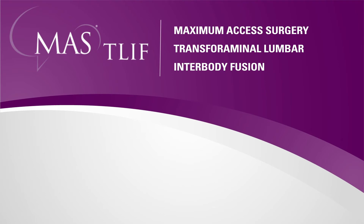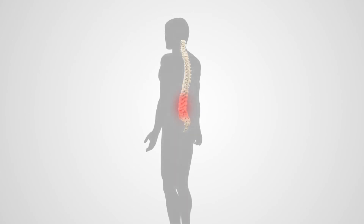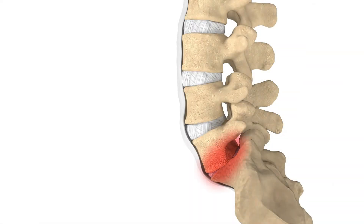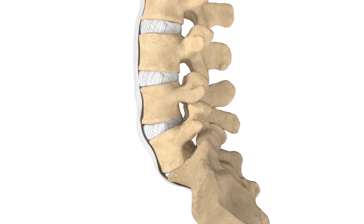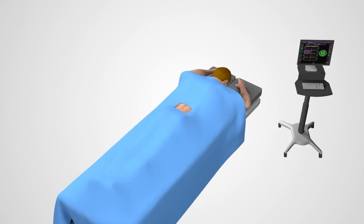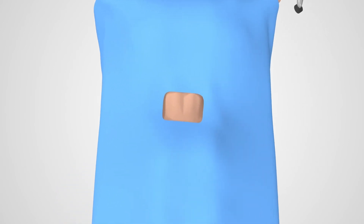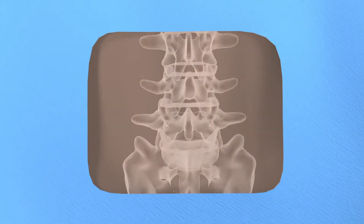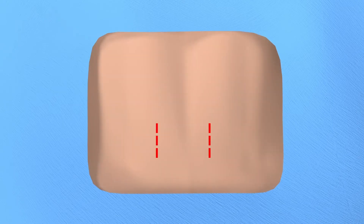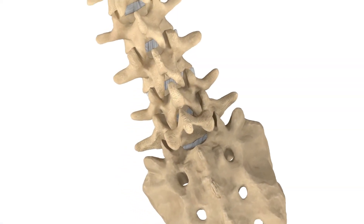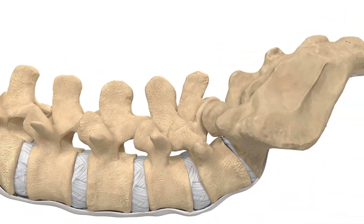This video describes the procedure, which is called the MAS T-LIFT. It shows the area of the spine being treated — the low back — and the affected level highlighted in red, where there's a damaged disc or a slipped vertebra. The patient is positioned on the table and the procedure is performed under live x-ray guidance. One downside is that I get x-rayed frequently since much of this is done under live x-ray. We make two small incisions and gain access to the spine through minimally invasive approaches that spare the muscles.